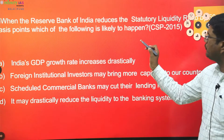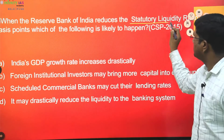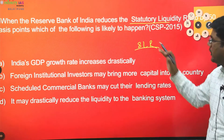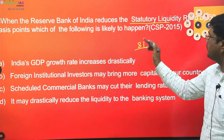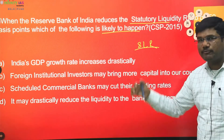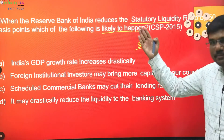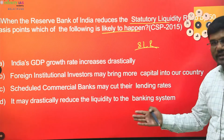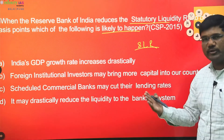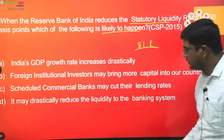Next question: when the Reserve Bank of India reduces the Statutory Liquidity Ratio (SLR), which of the following is likely to happen? Whenever RBI lowers the interest rate, we know it is a cheap money policy. Whenever RBI increases the rate, we know it is dear money policy or tight money policy.